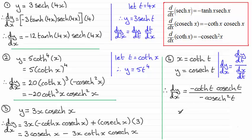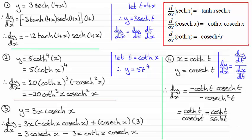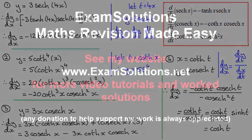Now we just need to simplify. We have a positive result, and cosech(t) cancels, leaving coth(t) over cosech(t). This simplifies further: coth(t) is cosh(t) over sinh(t), and cosech(t) is 1 over sinh(t). Dividing gives sinh(t) on top, and the sinh(t)'s cancel, leaving just cosh(t). I hope that gives you some idea of how we can use these results, and don't forget the proofs are in later videos. Thank you.